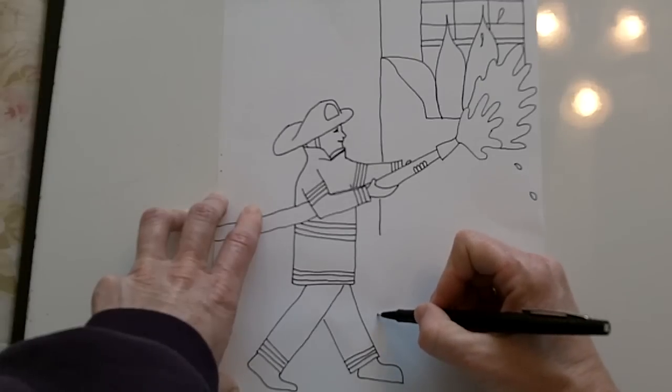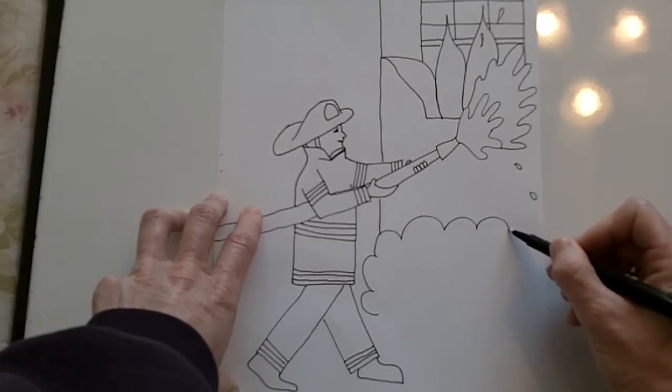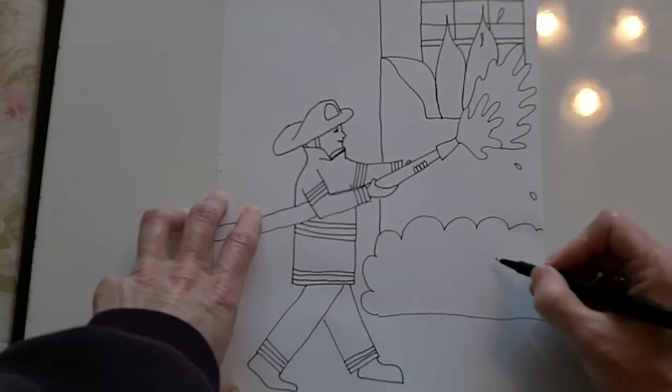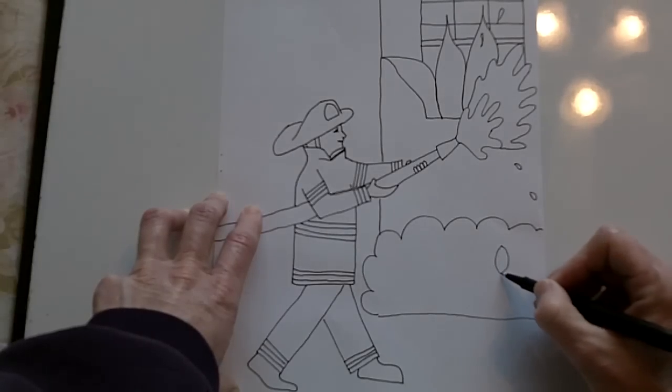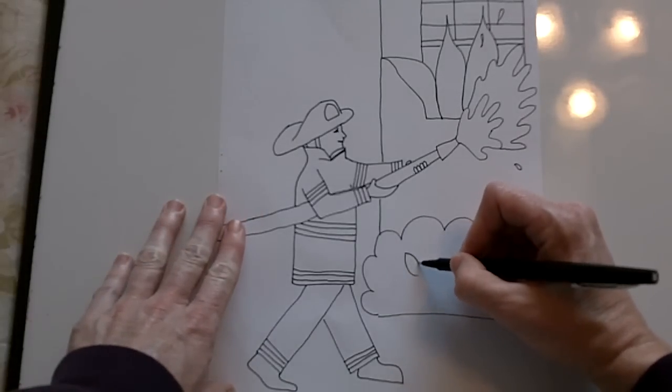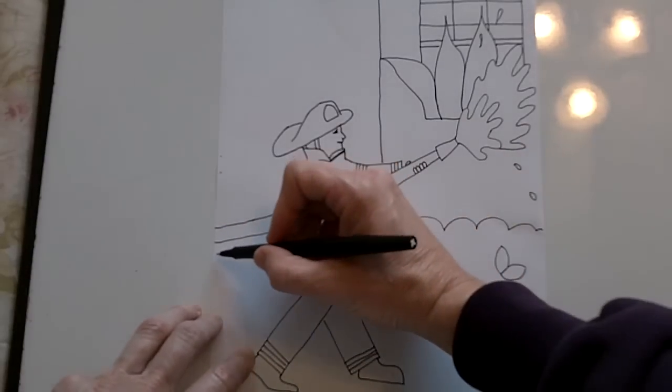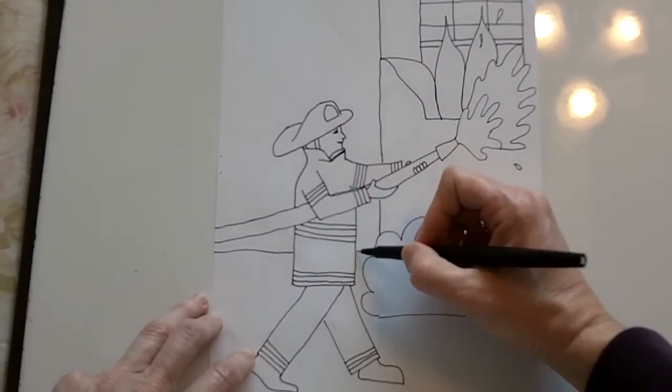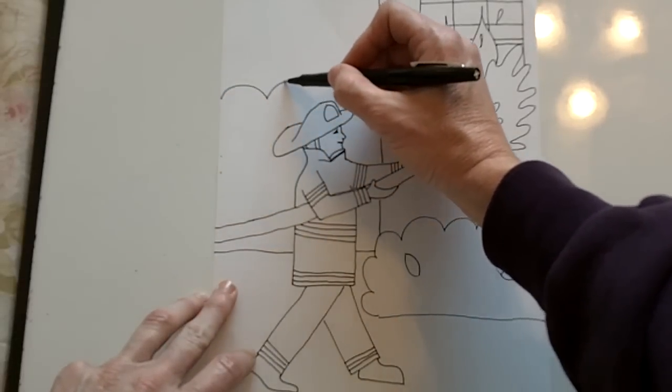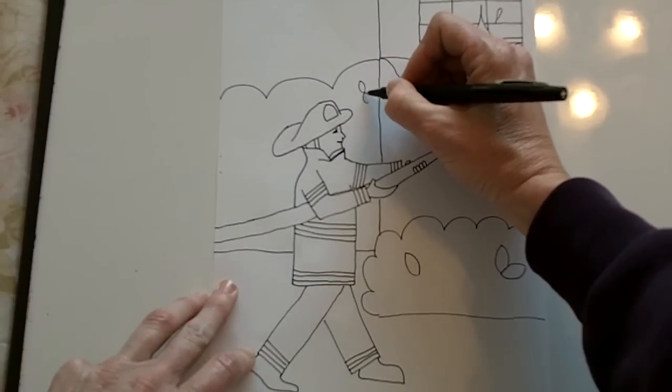And then draw a bush that is in front of the house or the building, like that, with some leaves, leaf shapes. In the background there's some more bushes, so just draw a line like that and then some big lines like that with smaller leaves because it's farther away.